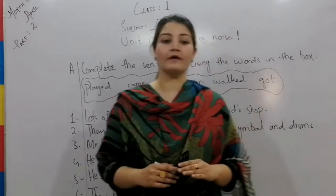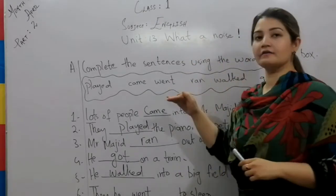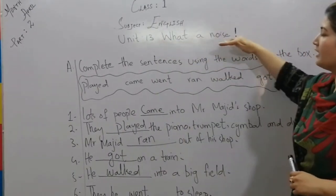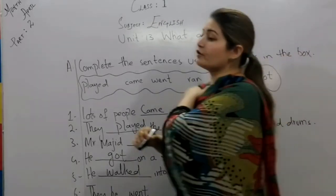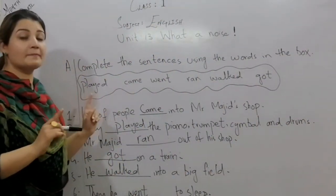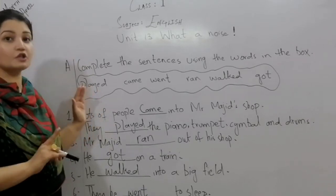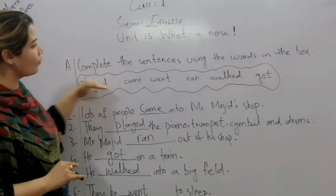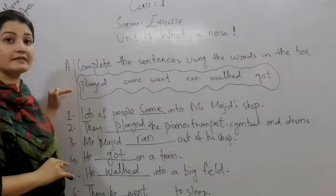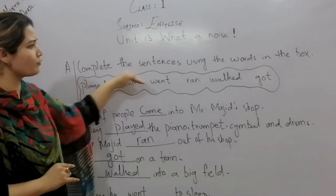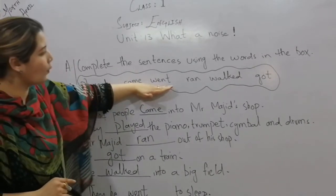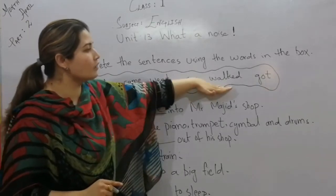We have one more exercise from the same chapter — unit number 13, 'What a Noise'. Here we have some sentences related to that chapter about Mr. Majid's music shop, and some words are given that we need to put in the correct sentences. The words are: played, came, went, ran, walked, and got. These are all past tense verbs. Their present tense forms are: play, come, go, run, walk, and get.